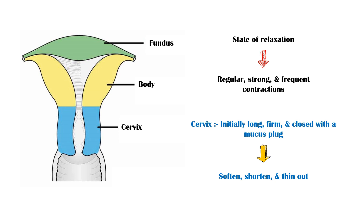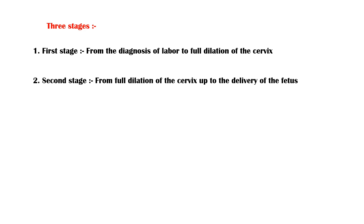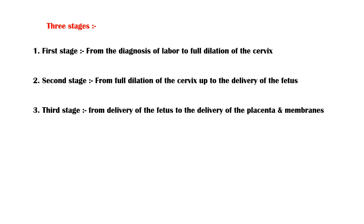Labor can be divided into three stages. The first stage is the period from the diagnosis of labor to full dilation of the cervix. The second stage is the period from full dilation of the cervix up to the delivery of the fetus or fetuses. The third and final stage is the period from the delivery of the fetus to the delivery of the placenta and membranes, and usually does not last more than 30 minutes.